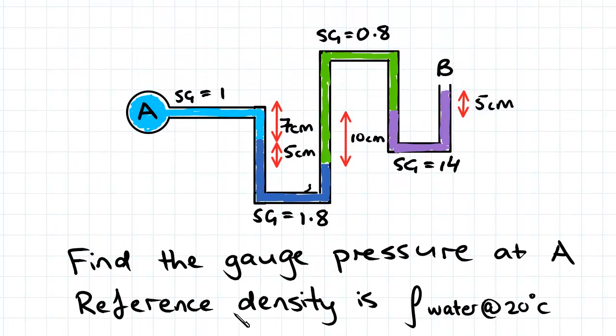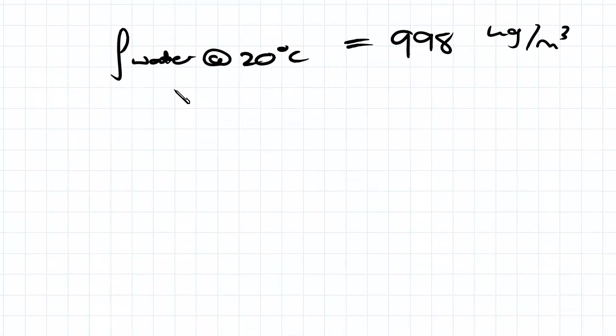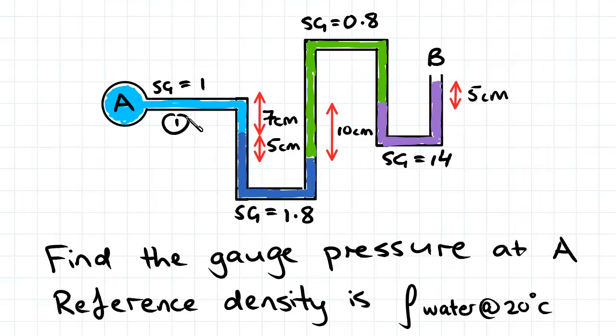And the first thing we're going to have to do in this example is find the density of each of the fluids. So I'm going to go ahead and do that. I'm going to call each of the fluids a number, so that's fluid 1, fluid 2, fluid 3, and fluid 4.